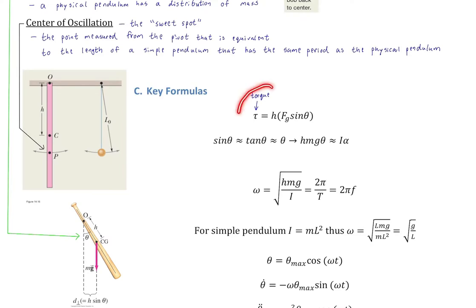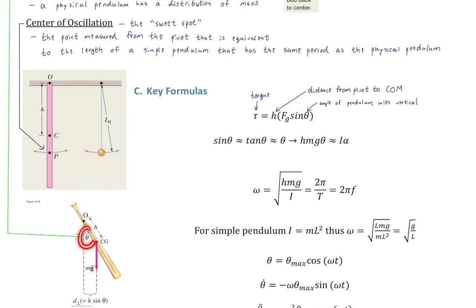We're talking about torque because this is a rotational system. The restoring force is a restoring torque — gravity creates a gravitational torque. The variable h is the distance from the pivot to the center of mass, because that's the only place where the gravitational force acts. The angle θ is the displacement of the pendulum from vertical. Releasing a pendulum from a particular angle determines how much initial potential energy you have, which converts to kinetic energy at the bottom of the swing.